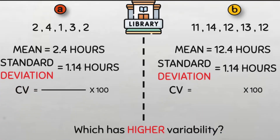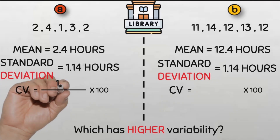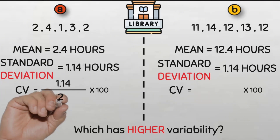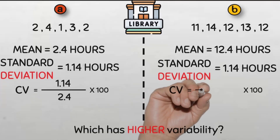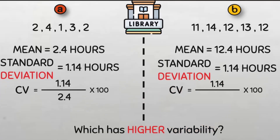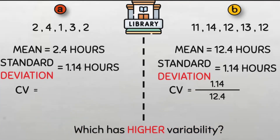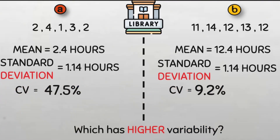Like I said in the beginning, the coefficient of variation is simply defined as the ratio of the standard deviation to the mean and is often expressed as a percentage — that's why you see multiplied by 100%. For data set A, the standard deviation is 1.14 and the mean is 2.4. So the coefficient of variation for A will be 1.14 divided by 2.4 multiplied by 100%. For B, the standard deviation is the same as A, which is 1.14, but the mean is 12.4, multiplied by 100%. So the coefficient of variation is 47.5% for A and 9.2% for B.